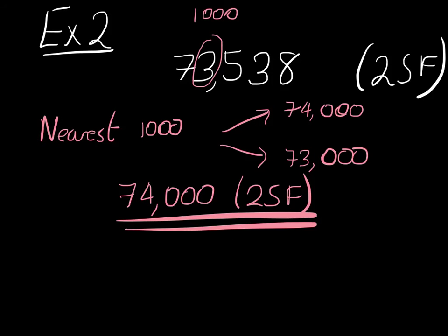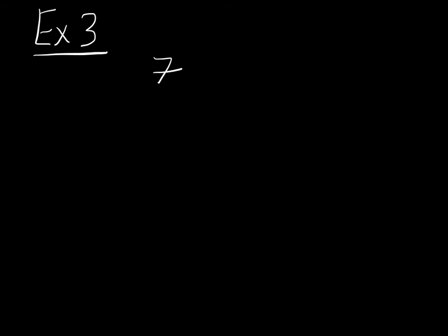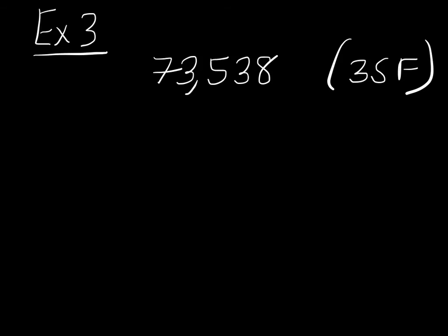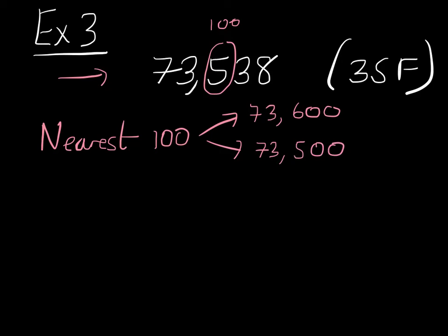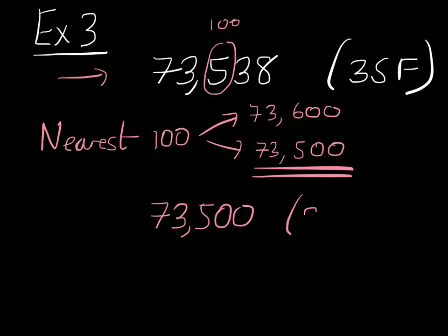Example 3: 73,538 to three significant figures. The third significant figure is clearly the 5, which is in the hundreds column. So what's the nearest hundred to that number? Our options are 73,600 or 73,500. 73,500 is closer because 538 is closer to 500 than to 600. So our answer is 73,500 to three significant figures.